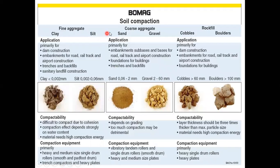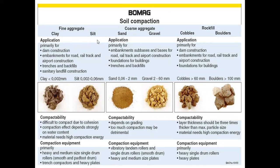These are the materials used for construction of earthen dams. Fine aggregates — that is clay and silt. Clay particle size is less than 0.002 mm, and silt particle size ranges between 0.002 to 0.06 mm. Applications of these fine aggregates include dam construction, embankments for roads, rail tracks, and airport construction, trenches and backfills, and landfill construction.